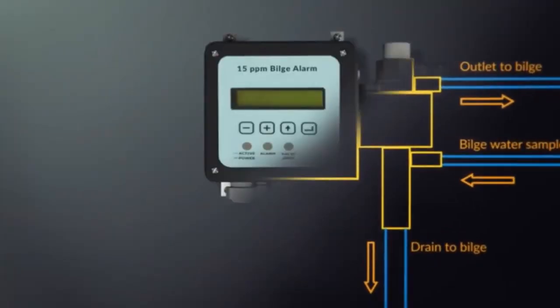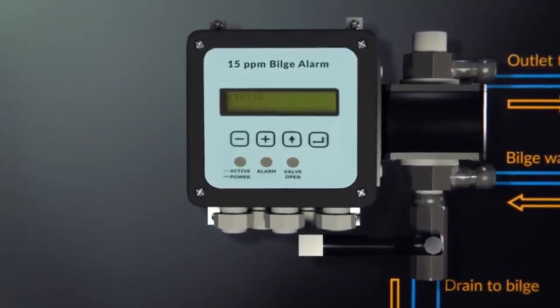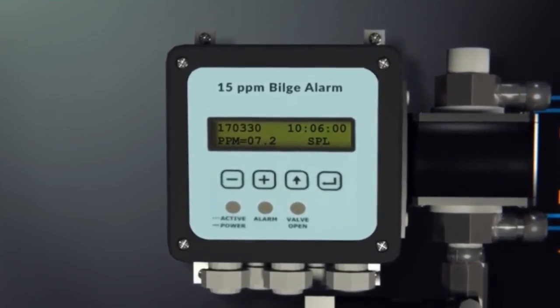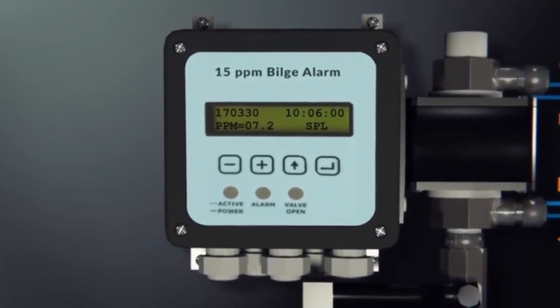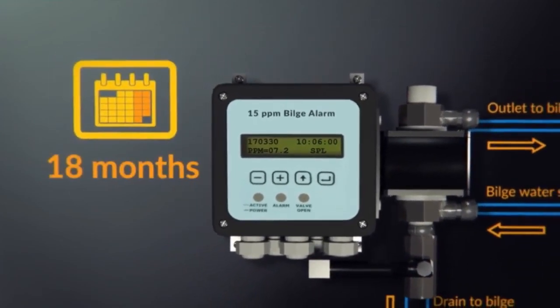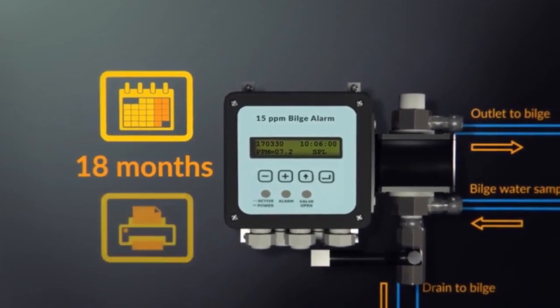The 15 ppm bilge alarm should record date, time, and alarm status and operating status of the 15 ppm bilge separator. The recording device should also store data for at least 18 months and should be able to display or print a protocol for official inspections as required.